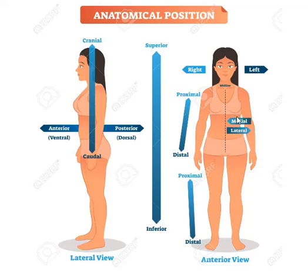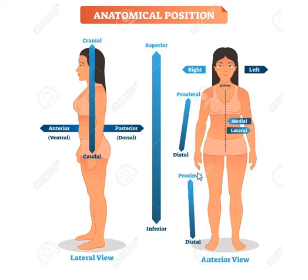The next terms are proximal and distal. Think of proximal as the top of something and distal as the farther end. For the arm, the top at the shoulder would be proximal compared to the fingertips, which are distal. The same applies to the leg: the top is proximal and down at the toes is distal. So proximal and distal is essentially like top and bottom.